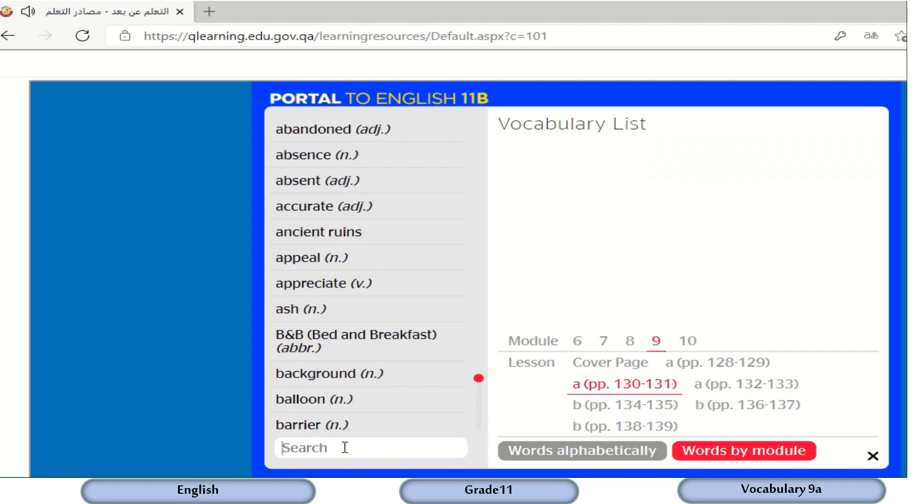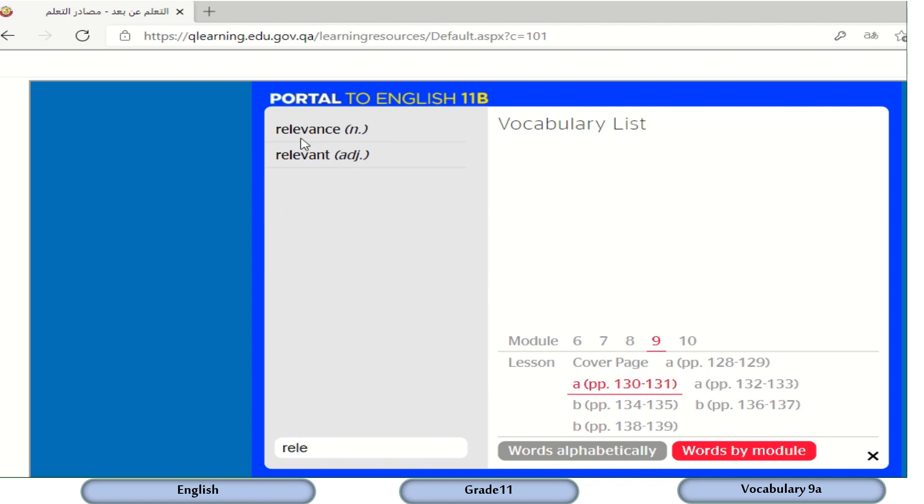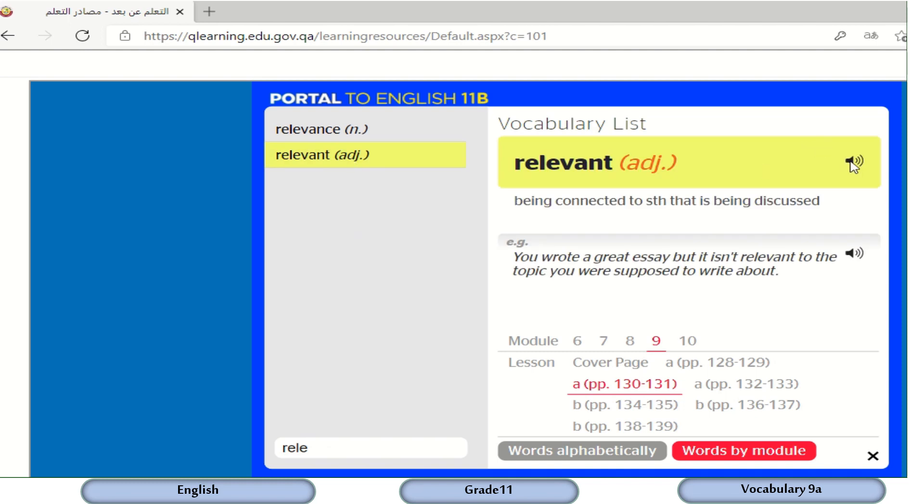Let's check another word. We have relevance and relevant, noun and adjective. Here is the pronunciation. Relevant, which means being connected to something that is being discussed.